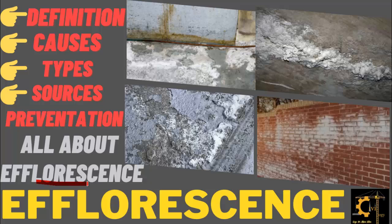What is efflorescence? What is its definition? How it is defined? What are its causes? What are its types? And what are the sources of efflorescence? And in the end, we will discuss how to prevent this defect. This is actually a defect in the building, which is obvious — you must have observed it on the ceilings, on the floors, and on the brick walls.